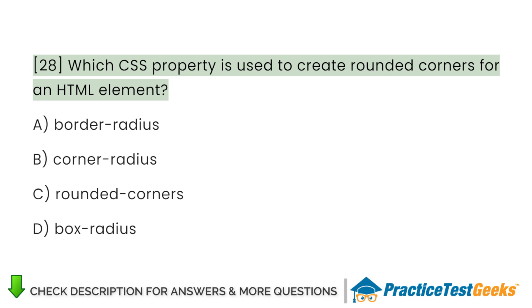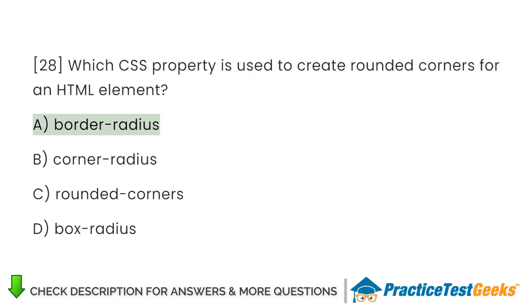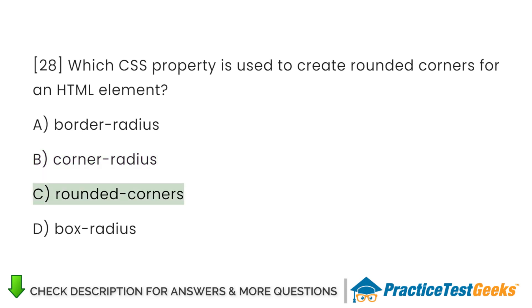Which CSS property is used to create rounded corners for an HTML element? A. Border-radius. B. Corner-radius. C. Rounded-corners. D. Box-radius.